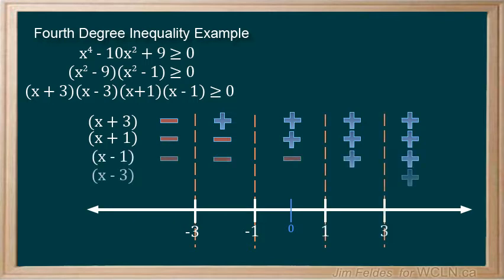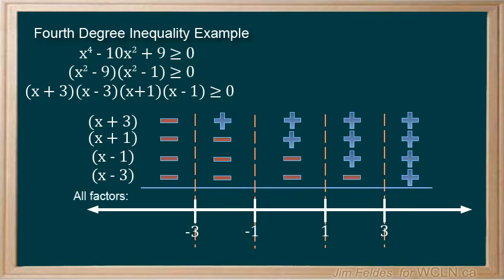Now we can evaluate the signs from our factors looking for odd or even numbers of negative signs. In the first interval, there's 4, making it even, which means positive. Second interval, 3, which is odd, making it negative. The third is 2, so positive. The fourth is odd, negative. And lastly, all factors are positive by the last interval.